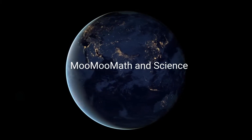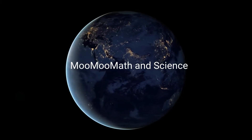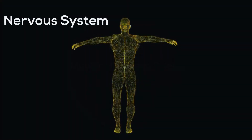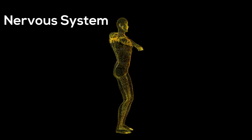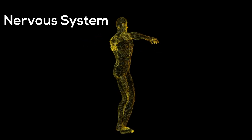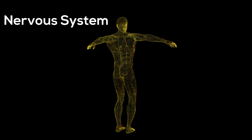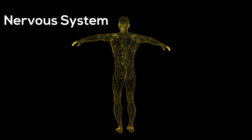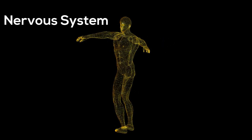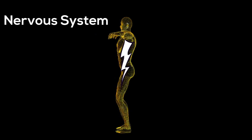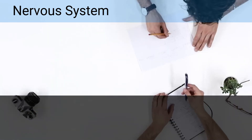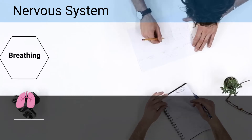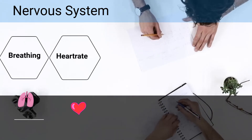Welcome to MooMooMath and Science. In this video, I'd like to talk about the nervous system. The nervous system controls most of your daily activities by sending electrical signals up and down your body. Each of the following activities are controlled by the nervous system.